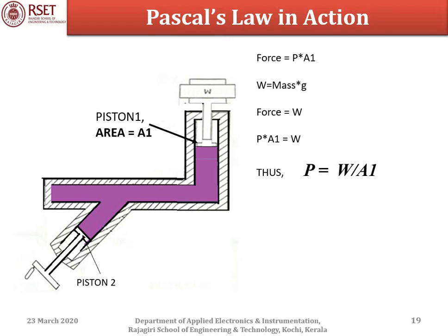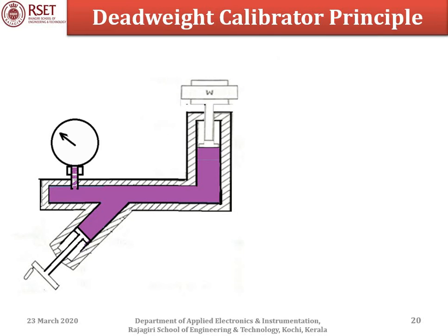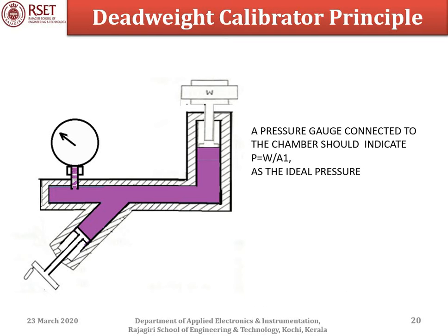Since W and A1 are known with very high accuracy, the calculation of pressure P is also very accurate. This calculated value of P can then be used to compare the reading of a gauge connected to the chamber. Ideally, the gauge should indicate a pressure of W / A1. Any deviation from this ideal reading is considered an error in the gauge.